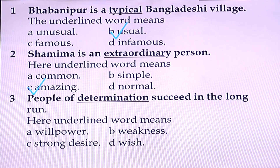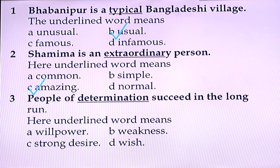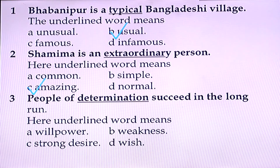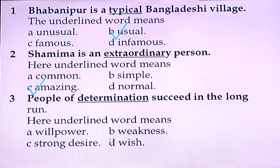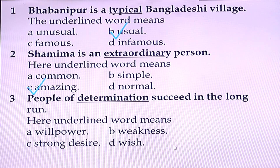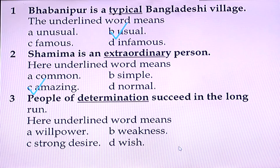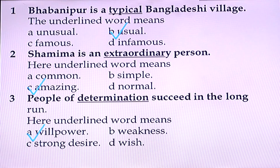Question three: 'People of determination succeed in the long run.' Here the underlined word means: (a) willpower, (b) weakness, (c) strong desire, (d) wish. The best answer here is: willpower.